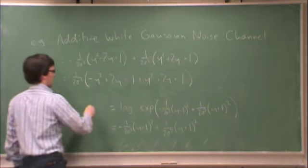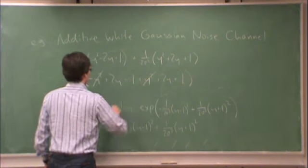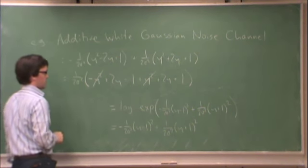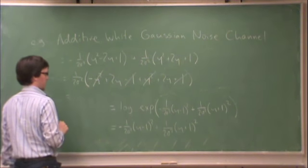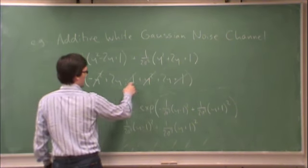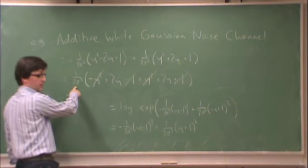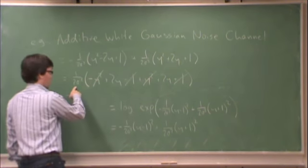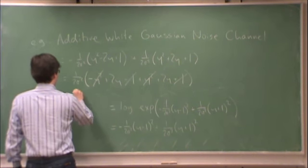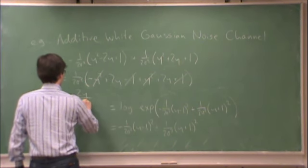So what I have is that y squared minus y squared, minus 1 plus 1, and ultimately what I get is 2y plus 2y divided by 2 sigma squared, which is 4y divided by 2 sigma squared, which is 2y over sigma squared.